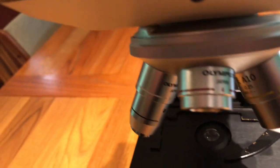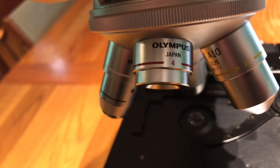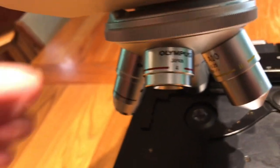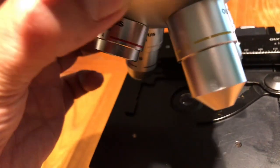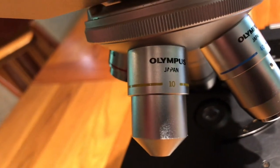Here is our smallest objective, and the 4 with the red band indicates that that is a magnification of 4x. And then if we go to the yellow one which is bigger, that's a magnification of 10x.